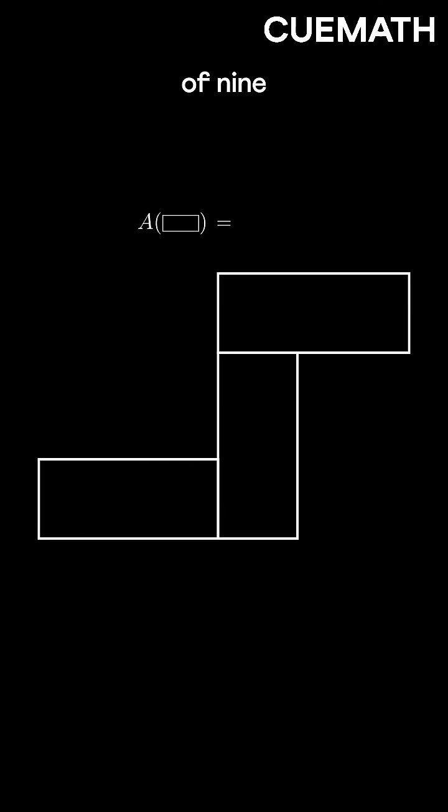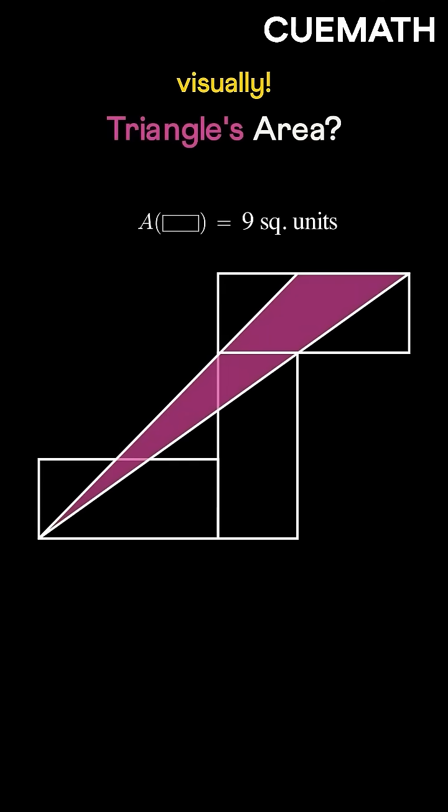Three identical rectangles have an area of nine square units each. What's the area of this triangle? Let's solve it visually.